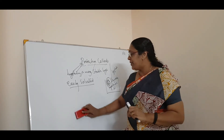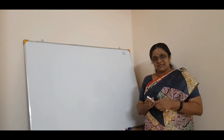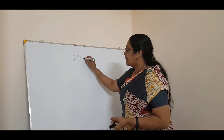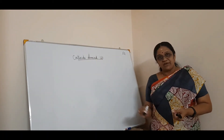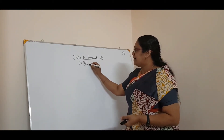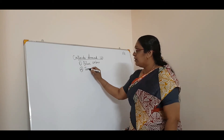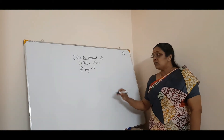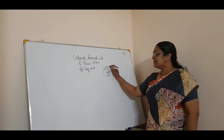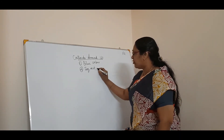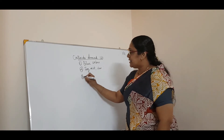Now we will look at colloids around us. The blue color of the sky is due to colloids. Fog and mist are colloids — liquid in gas (aerosol). Dew is also a colloid seen around us. Food particles like cheese and butter, paint and stones — all these are colloids.